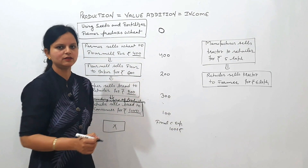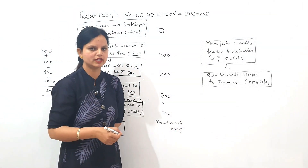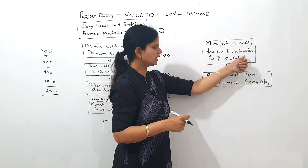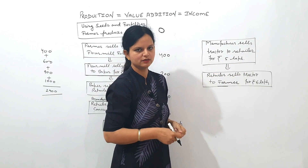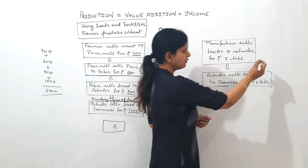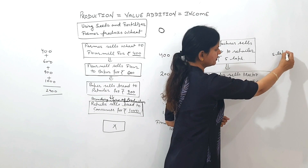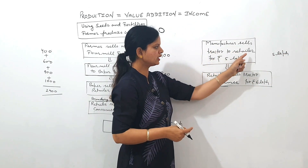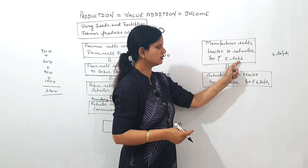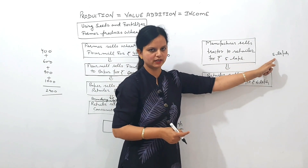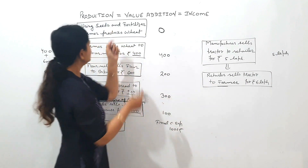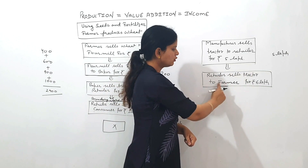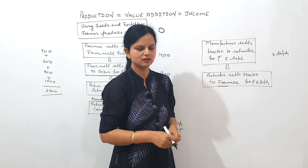Let's understand final investment expenditure through another example. A manufacturer sells a tractor to a retailer for ₹5 lakh — so the manufacturer has done value addition of ₹5 lakh, or production of ₹5 lakh. The retailer then sells the tractor to a farmer for ₹6 lakh.